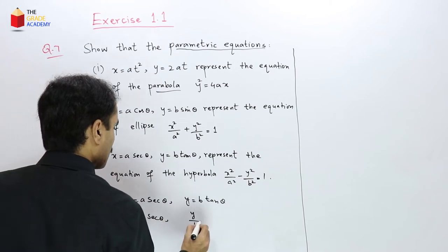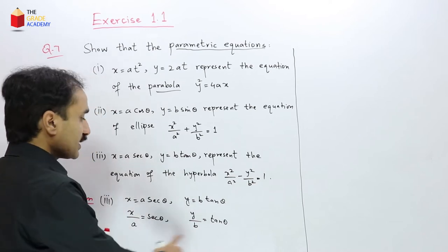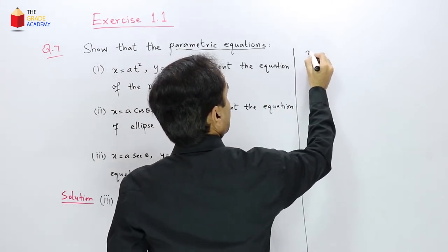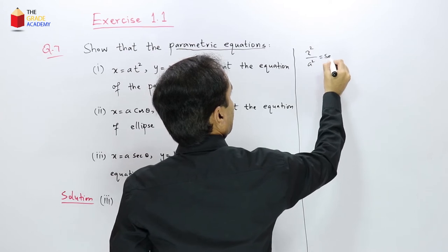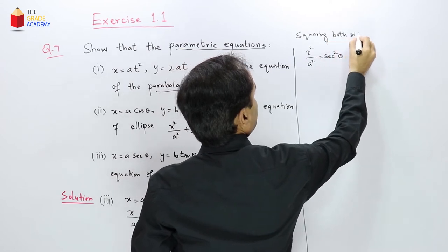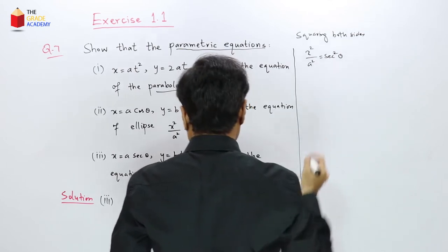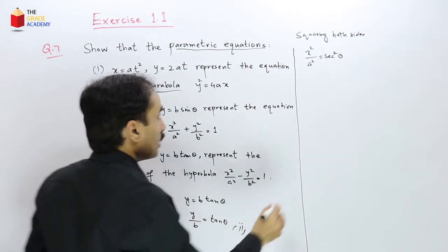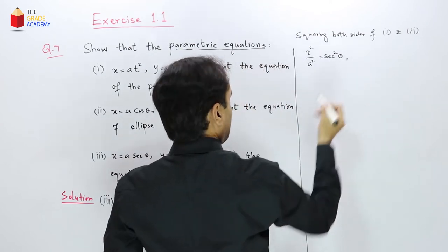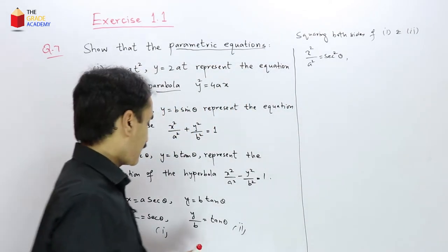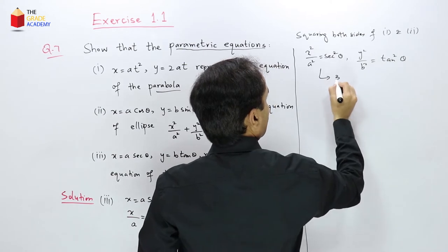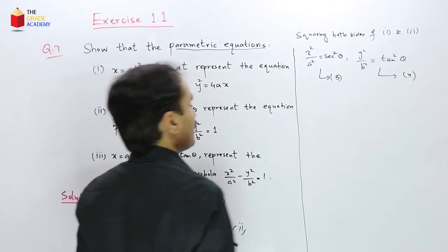From equation 1: x/a = secθ, and from equation 2: y/b = tanθ. Squaring both sides: x²/a² = sec²θ (equation 3) and y²/b² = tan²θ (equation 4). Here we need to subtract rather than add.